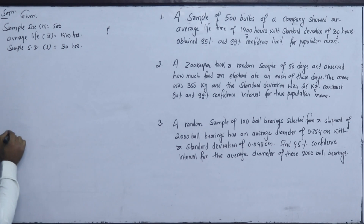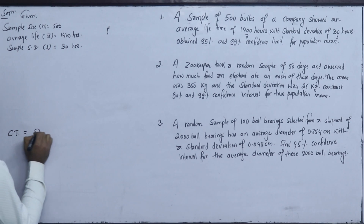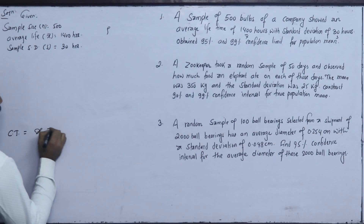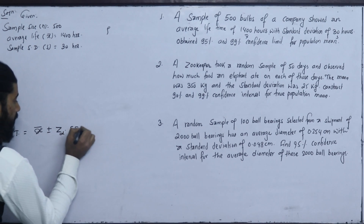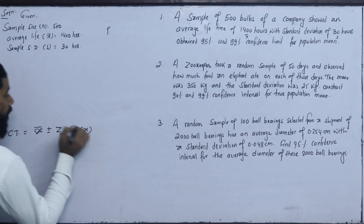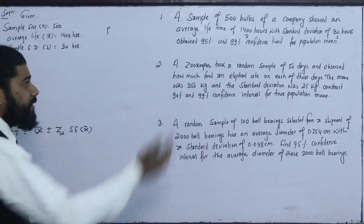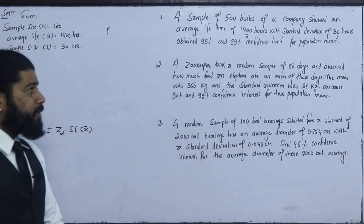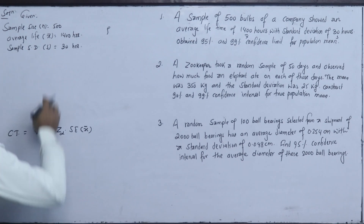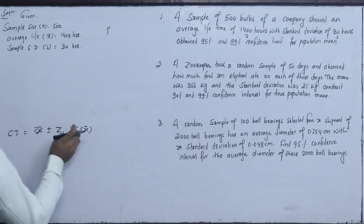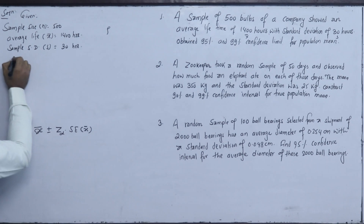The confidence interval (CI) formula is: sample mean plus or minus Z_alpha into the standard error of the mean. For the mean, the standard error is the standard deviation divided by the square root of n.